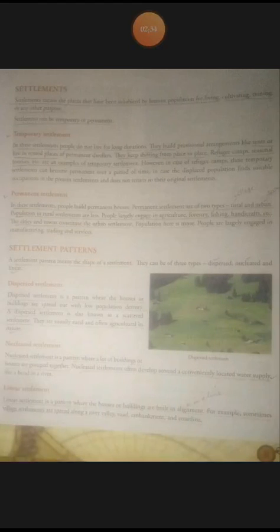A dispersed settlement is a pattern where the houses or buildings are spread out with low population density. A dispersed settlement is also known as a scattered settlement. They are usually rural and often agricultural in nature.